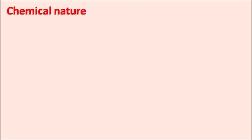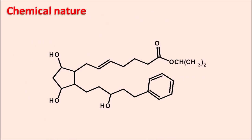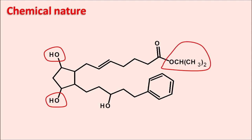Looking at the chemical nature of latanoprost, we can identify OH groups at the 9th and 11th positions, which indicates it is a prostaglandin F2 analog. This drug is available as a prodrug in ester form — specifically an isopropyl ester. When this isopropyl ester is hydrolyzed, it gives the free acid, which acts as the active metabolite. So latanoprost is a prodrug which is converted into latanoprostic acid.